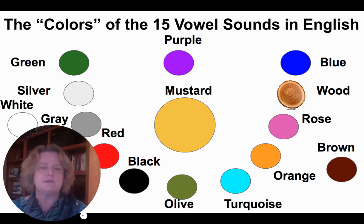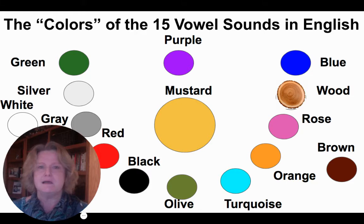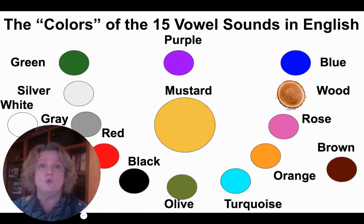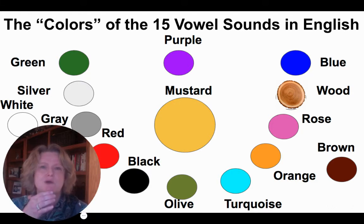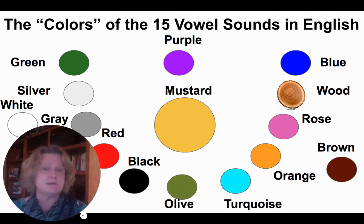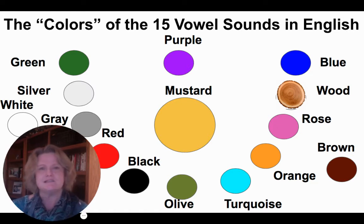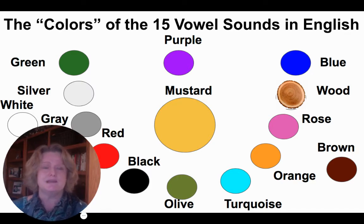Notice how I'm rounding my lips for that sound. If you get your tongue further back, still high, you get blue — Ooh. Look at my lips, it's not open but rounded, like sipping water through a straw. Wood is pretty similar but short and quick, with the tongue just a little bit more relaxed and lower.